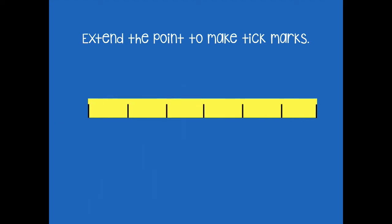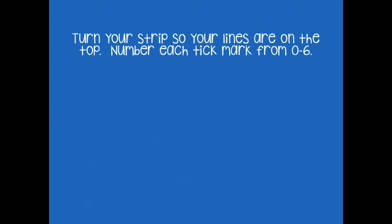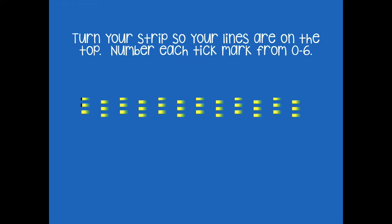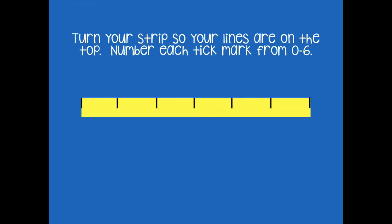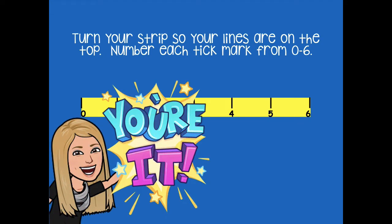Turn your strip so your lines are on top, and you're going to number each tick mark from zero to six. So we just flipped our strip around — label zero, one, two, three, four, five, and six. Pause the video, turn yours, label zero to six on your paper strip, and then click play when you're ready for the next step.